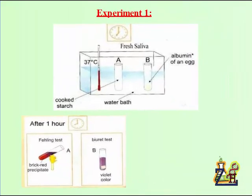Experiment 1. In this experiment we have a water bath at 37 degrees Celsius and in it there are two tubes A and B. In tube A there is some cooked starch, in tube B there is an albumin of an egg which is a type of protein, and in both tubes there is fresh saliva.